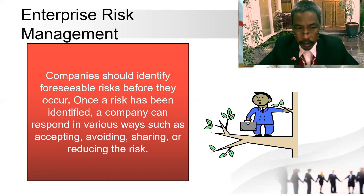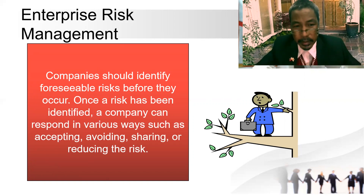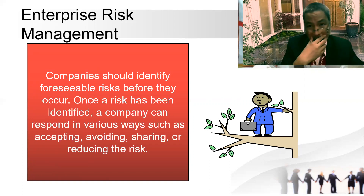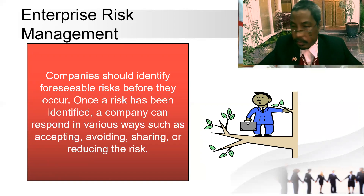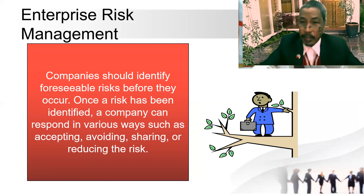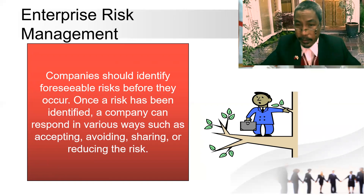Almost always, we consider reducing the risk or sharing the risk with other partners — that's why we partner with other companies, so that our risk is shared. We can avoid it by, for example, totally closing a certain product line. If a company is manufacturing refrigeration systems, washing machines, and air conditioning, we can stop one operation to avoid the risk of that business sector. We can also simply accept the risk, but when accepting higher risk, you have to be prepared for what will happen later.